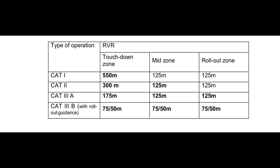However, if the rollout RVR is less than 125 meters, then this approach will not be Category 2 anymore. For a Category 2 approach, even though the rollout zone RVR is not compulsorily reported, if it is reported it must be more than 125 meters. If the rollout zone RVR reported is 80 meters, the approach will not be Category 2 and will instead fall under Category 3B, where the minimum RVR required is 75 meters.